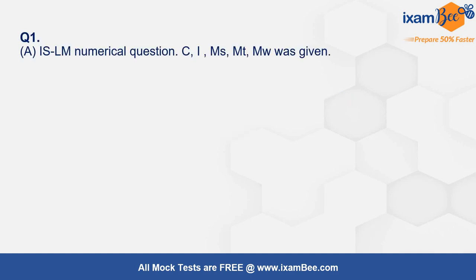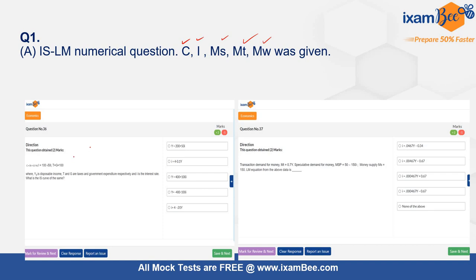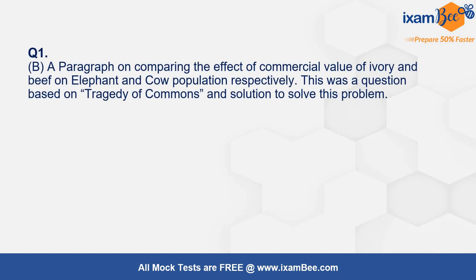The first question was a numerical on the IS-LM framework, where values of consumption, investment, money supply, money demand, transactionary demand for money, and speculative demand for money were all given, and you had to find the equilibrium interest rate. Similar questions appeared in the mock tests. You use the equation Y = C + I for the IS curve, and Money Supply = Money Demand (sum of transactionary and speculative demand) for the LM curve, then equate both to get the equilibrium interest rate.